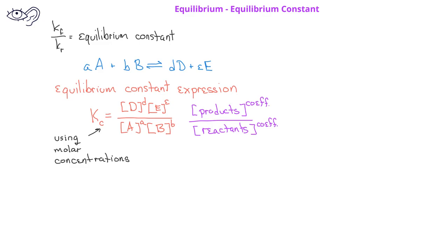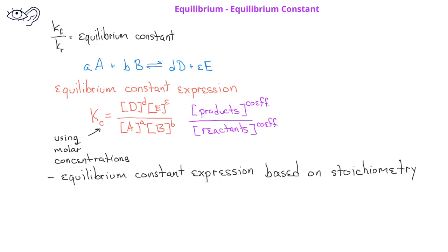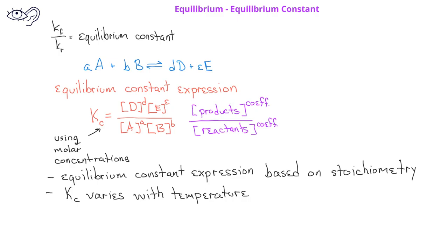The equilibrium constant expression depends only on the stoichiometry of the reaction, and it is not based on the mechanism. Also, for a given reaction, the equilibrium constant will vary with temperature. Just as temperature changes, the rate constants will also change. Let's look at how to write the equilibrium constant expression for the reaction of hydrogen reacting with iodine to produce hydrogen iodide.